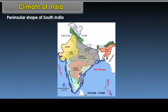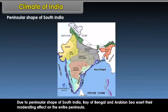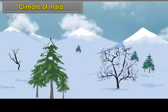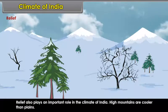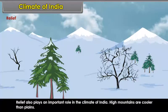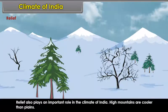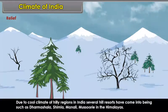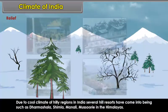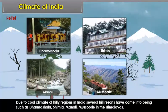Due to the peninsular shape of South India, the Bay of Bengal and Arabian Sea exert their moderating effect on the entire peninsula. Relief also plays an important role in the climate of India. High mountains are cooler than plains. Due to the cool climate of hilly regions, several hill resorts have come into being such as Dharamshala, Shimla, Manali, and Mussoorie in the Himalayas.